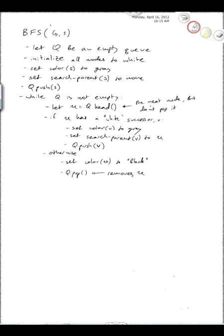So this was breadth-first search. It takes in as input a graph specification and a start node S. We're maintaining node colors: a node is white if we've never seen it before, gray if we've seen it and we're not done processing it yet, and black if we've extracted all the useful information out of the node and we're done processing it. And then there's a big loop that actually performs the search algorithm. Let's run this algorithm on an example graph.